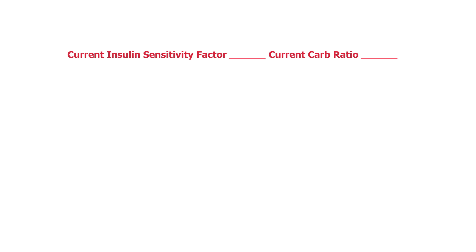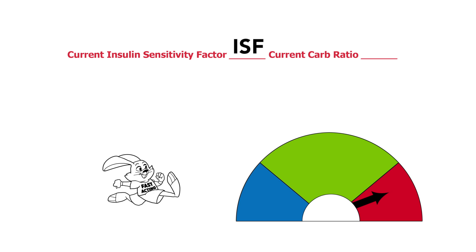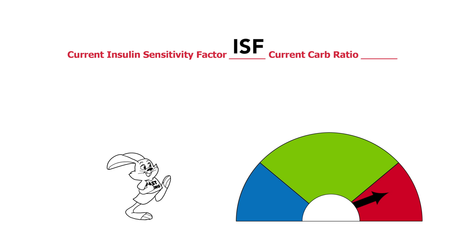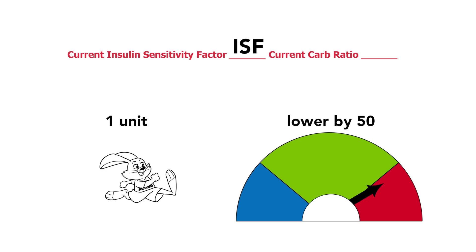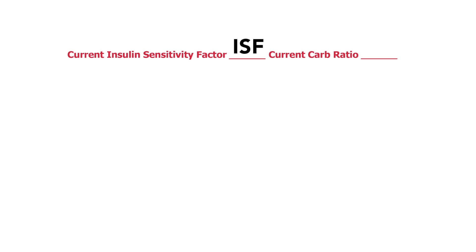Your doctor will tell you what these numbers are for your child. The insulin sensitivity factor, or ISF, tells us how sensitive a person is to insulin. For example, an insulin sensitivity factor of 50 means that one unit of fast-acting insulin will lower blood sugar by about 50 points. So for this example, let's write 50 here. Your child may have a different ISF.